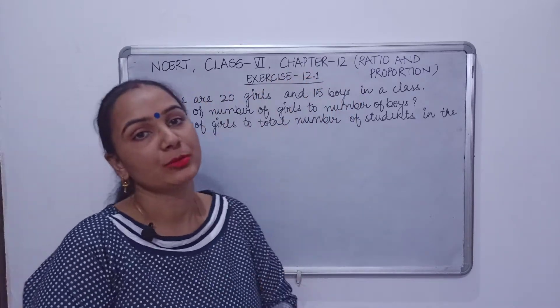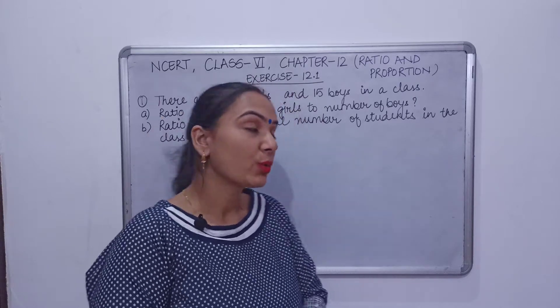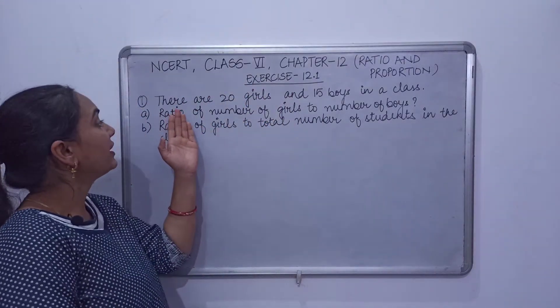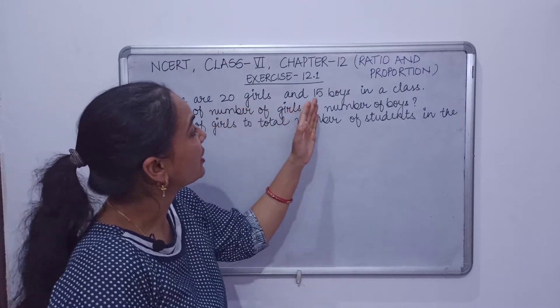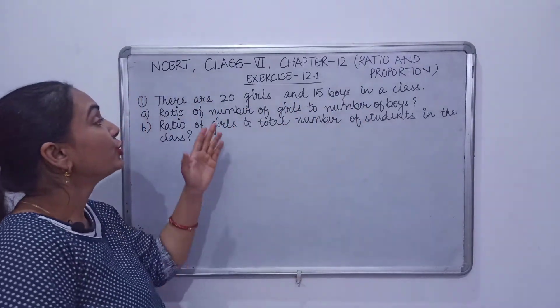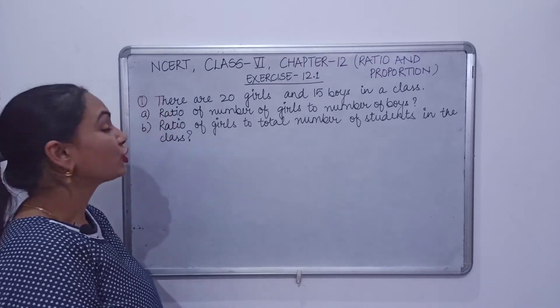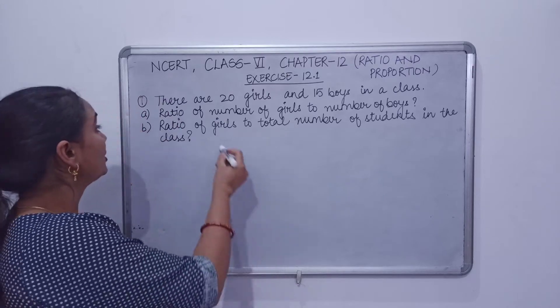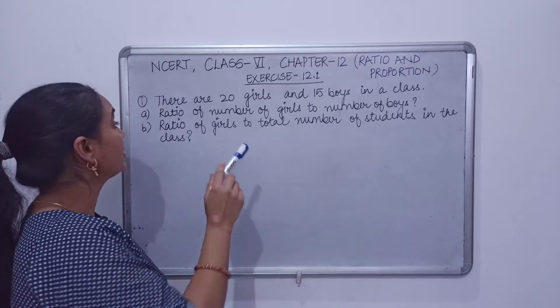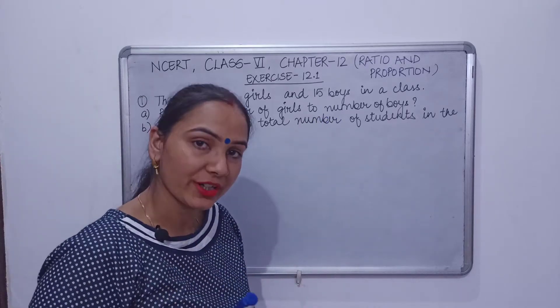Question 1 is: there are 20 girls and 15 boys in a class. So what do we need to find? First of all, we need to find the ratio of number of girls to number of boys.